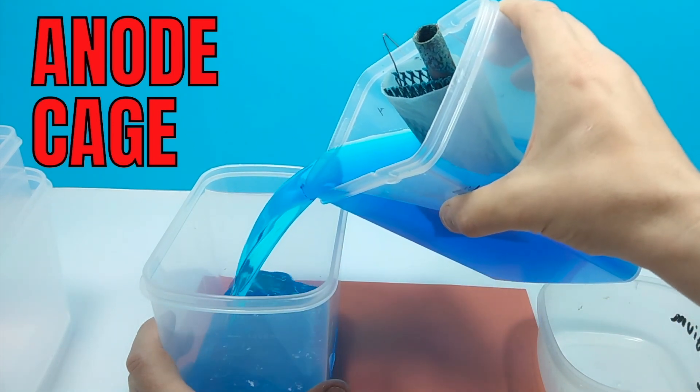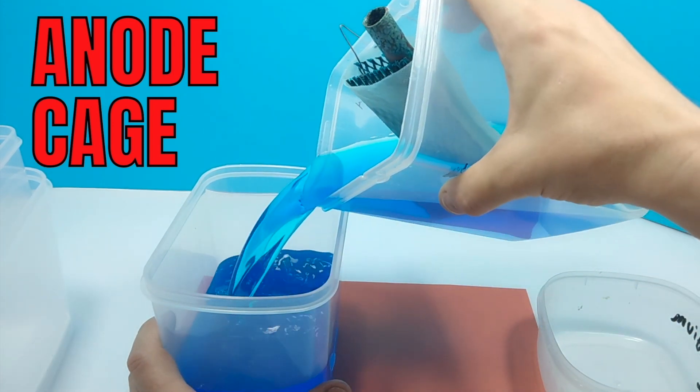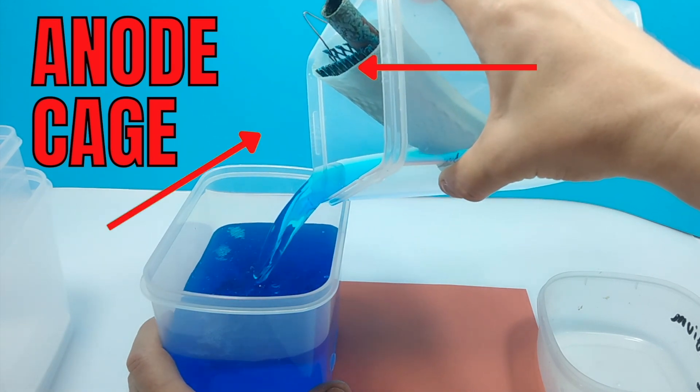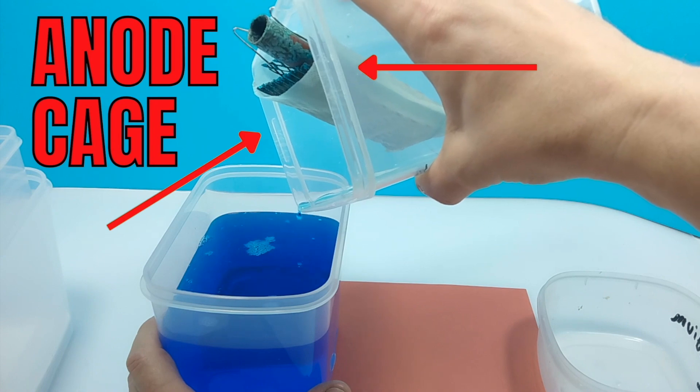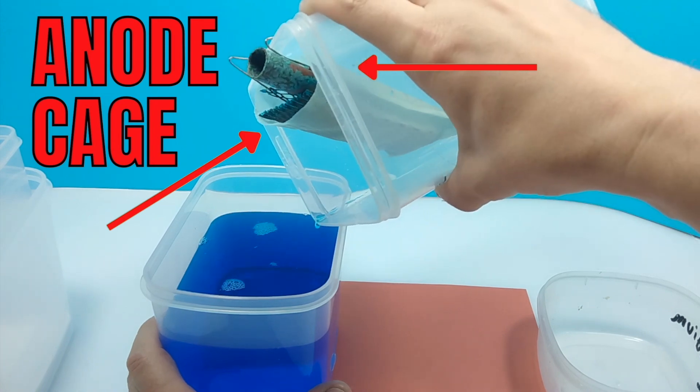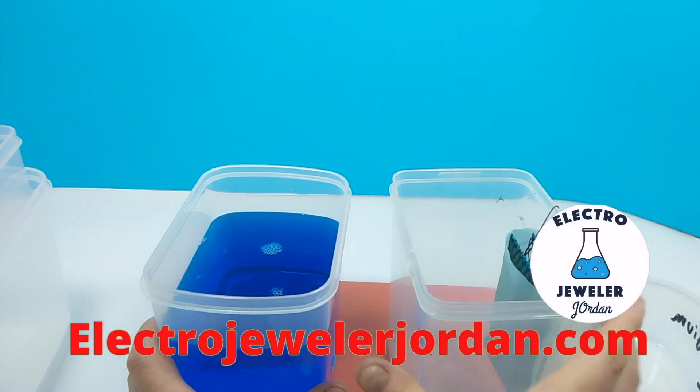I have an anode cage and instead of pulling it out and leaking anode gunk all over the tank I'm gonna pour the electroform electrolyte into another container and then rinse the cage and the tank out. If you are super efficient you can even have an identical tank to filter it into and save yourself a step. Fancy.